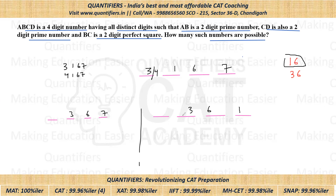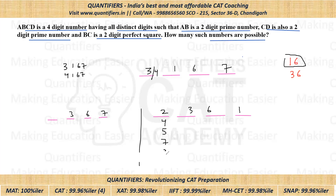Sub-case 2a: BC = 36, CD = 61. AB is a prime ending in 3. We can't take 13 (digit 1 already used). Valid options: 23, 43, 53, 73, 83. We eliminate 63 (not prime, and 6 is used) and 93 (not prime). This gives five possible cases.